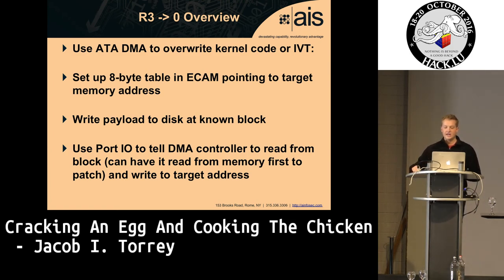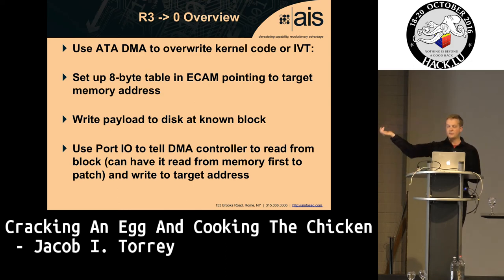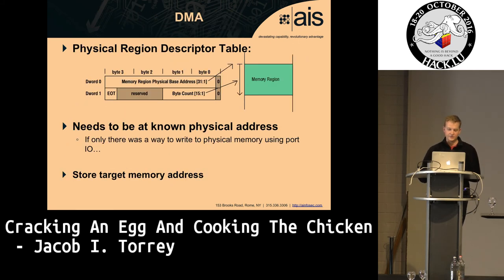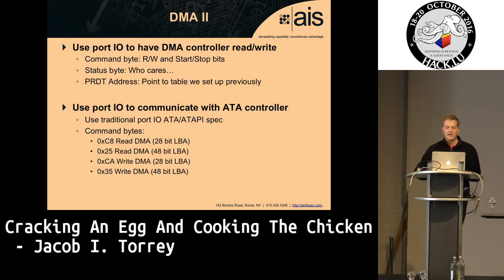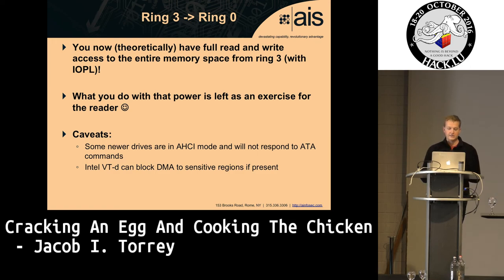You can set up a table in the ECAM pointing to the memory address of the file you want to write, write the payload to disk, then use port IO to tell the DMA controller to read it — and that happens at the disk level, outside the CPU. This is what the table looks like, which you just shove into the ECAM. You then send those commands and now have full read/write access to the entire memory space from ring three.